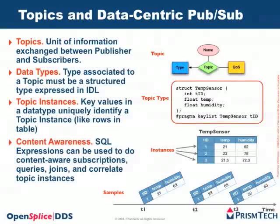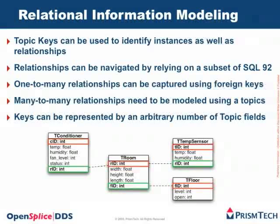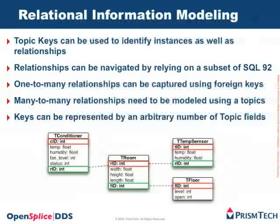Topics can be manipulated and filtered using SQL expressions — you can run queries as well as doing content-based subscription using a subset of SQL 92. Since DDS supports the concept of topic and the concept of key, it becomes natural to model relational data or a distributed relational information model. For instance, if we wanted to design a temperature control system with floors, each floor having several rooms, and each room having conditioners and temperature sensors, we could model this as topics and relationships between topics. Relationships are captured using typical database foreign key techniques, and at runtime you use SQL to navigate the various relationships.